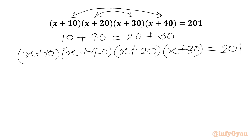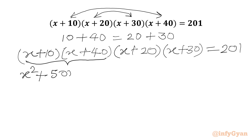Now we are going to multiply the first two brackets. We write x times x giving x squared, plus x times 40 giving 40x, plus 10 times x giving 10x. So 40x and 10x give us 50x, plus 10 times 40 which is 400.